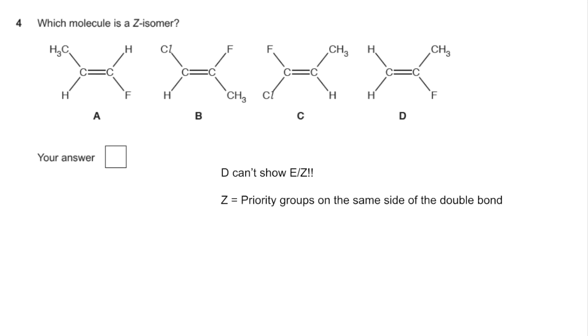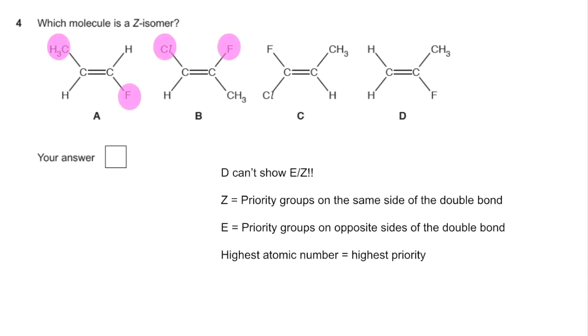The Z isomer is when your priority groups are on the same side of the double bond. Your E isomer is when the priority groups are on opposite sides of the double bond. And to determine the priority group, you're looking for the atom with the highest atomic number directly bonded to the carbon. So in molecule A, there's your priority groups. In B, it's those two. And in C, it's those two. Remember, D can't show it, so B is the answer.